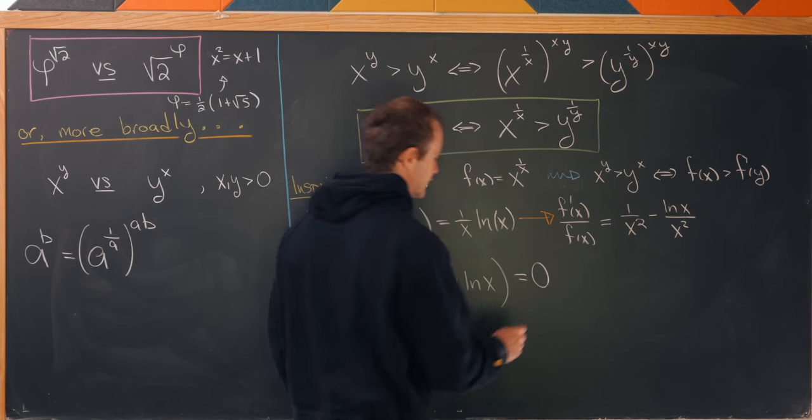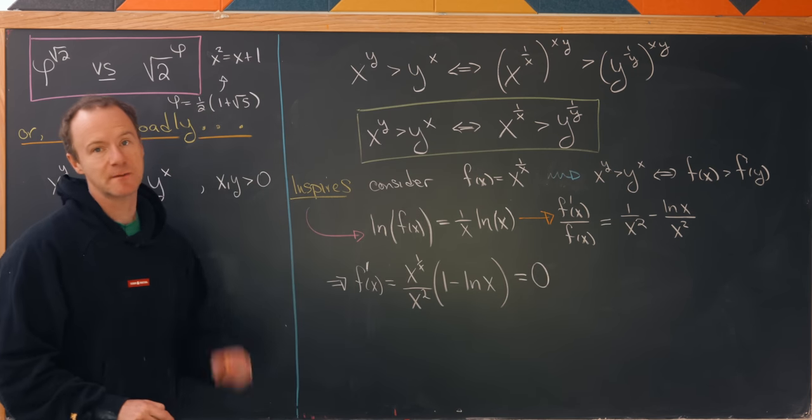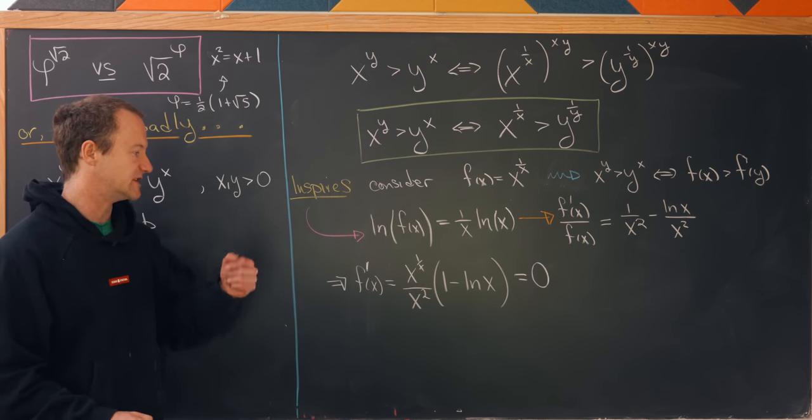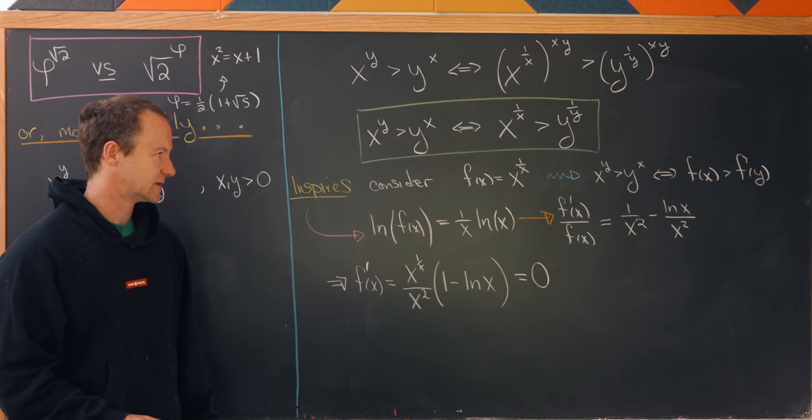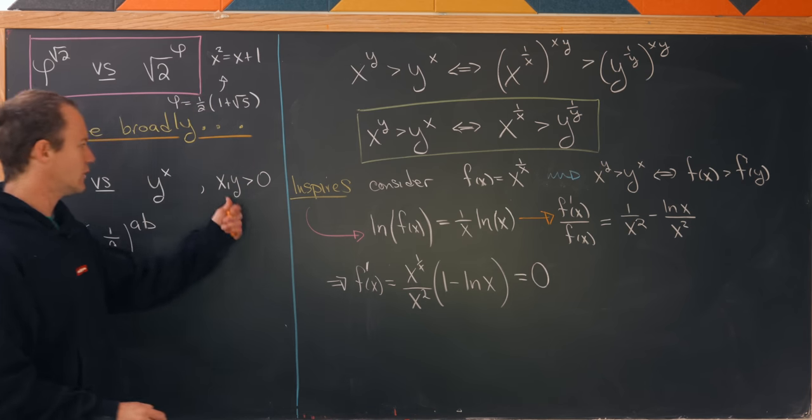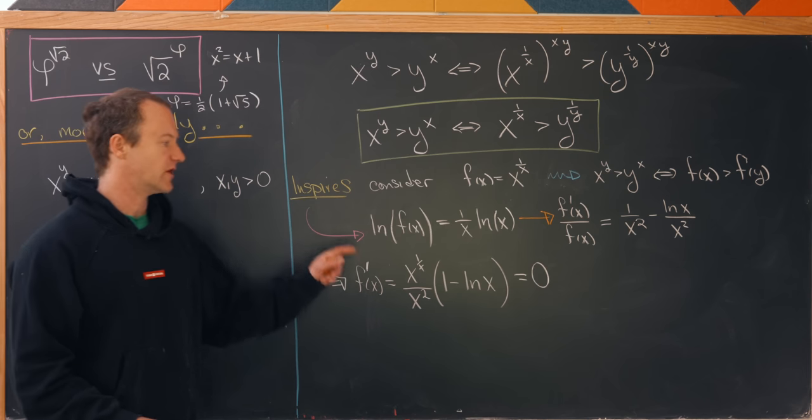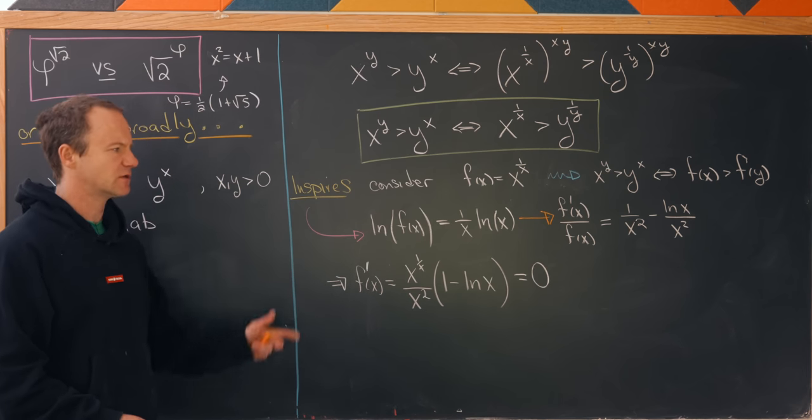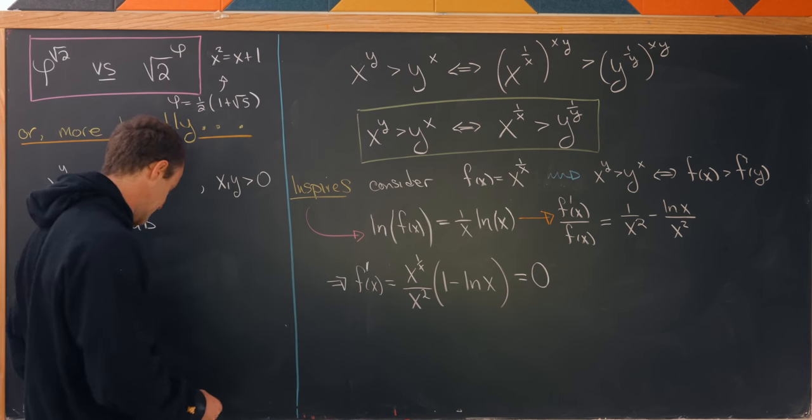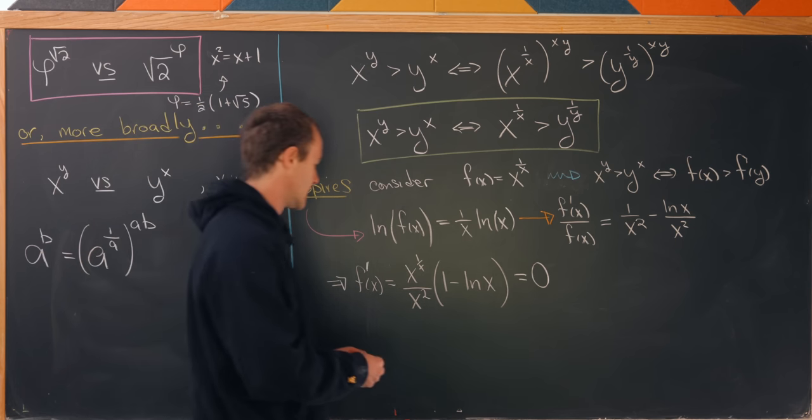Let's recall that maximums occur at critical points. And critical points are where the derivative is 0 or does not exist. But since we're only interested in positive inputs here, this derivative will always exist which means we really just need to find out where the derivative is equal to 0.